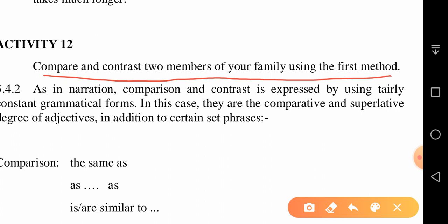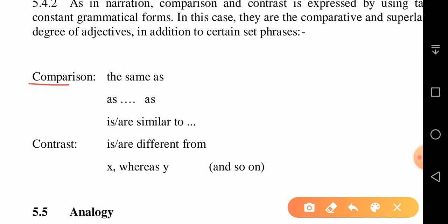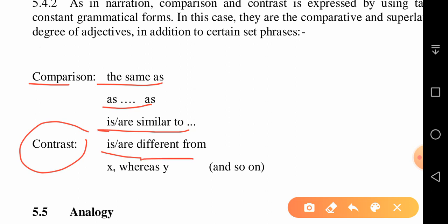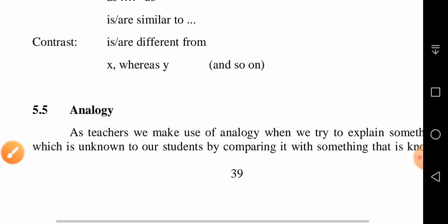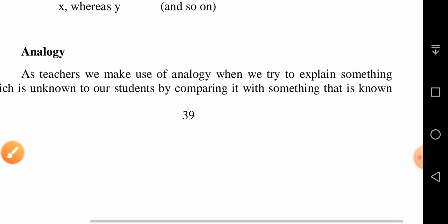There is an activity: compare and contrast two members of your family using the first method. When comparing, we use words like 'the same as,' 'similar to,' etc. When contrasting — giving dissimilarities — we say 'different from,' or 'one thing is like this whereas the other is like that,' and so on.